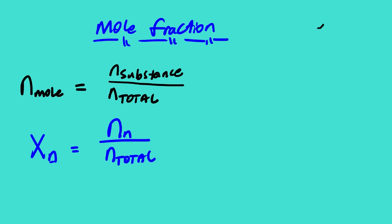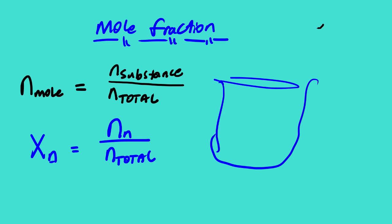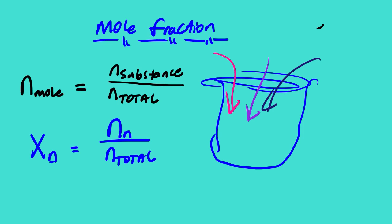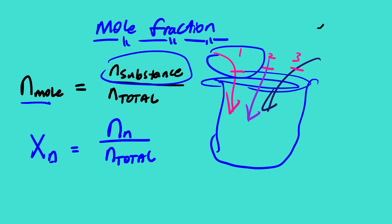Suppose we have a container with different types of gases — gas 1, 2, and 3. To find the mole fraction of gas 1, we find the sum of the number of moles for all gases, then divide the number of moles of gas 1 by the total number of moles. This gives us the mole fraction of that particular gas.